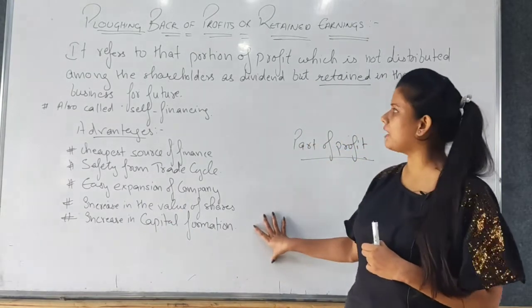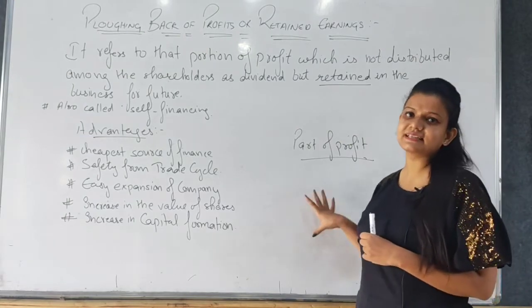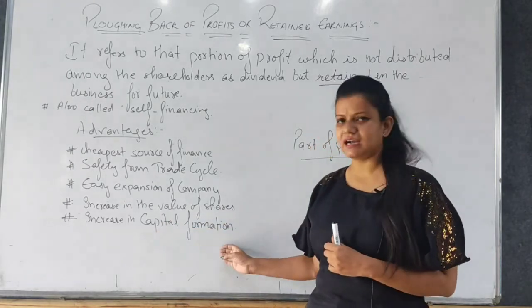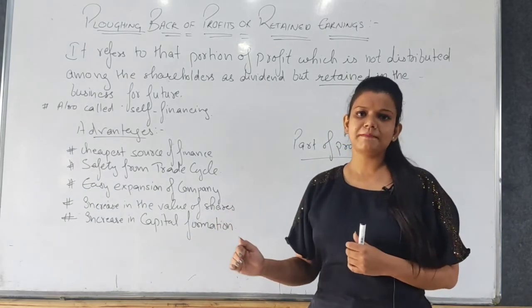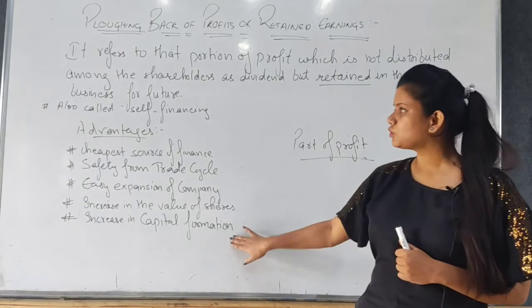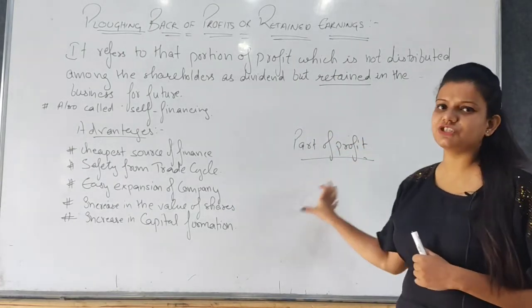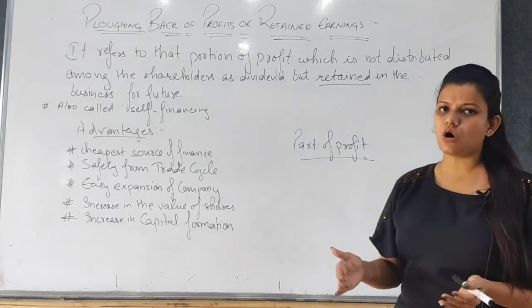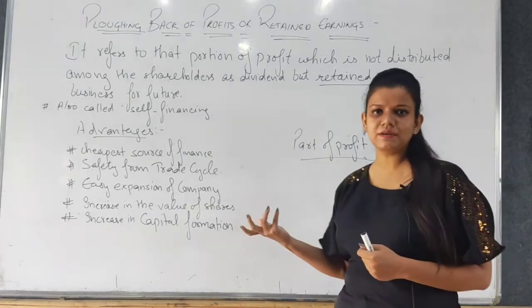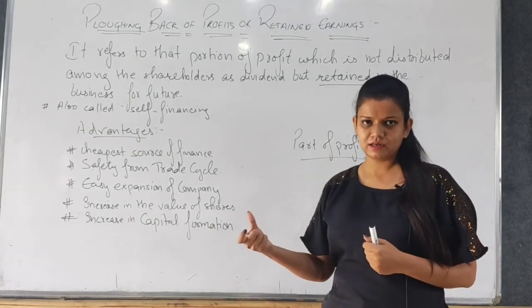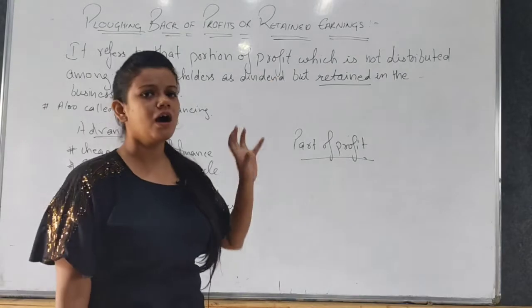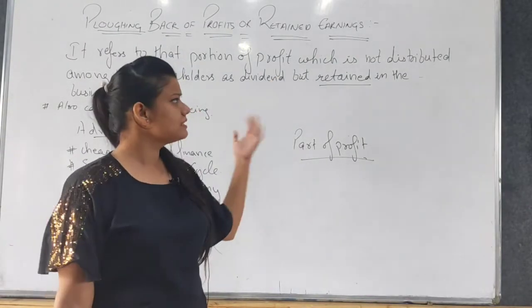The fifth advantage is increase in capital formation. If a company has a sufficient amount of retained earnings or money in their reserves, this always increases the capital of the company, which in turn increases capital formation. So ploughing back of profits — which may be a medium-term or long-term source of funds — is basically the use of undistributed profit retained as a reserve for future needs.